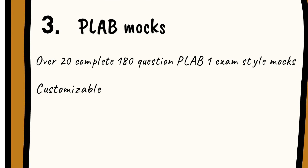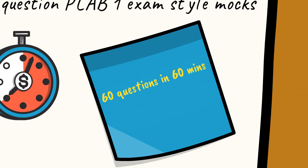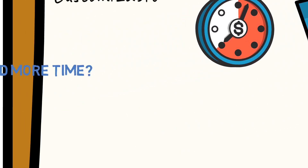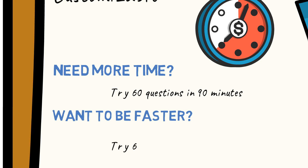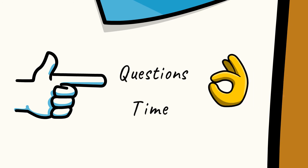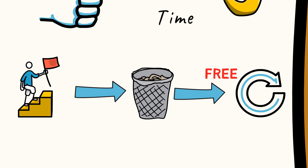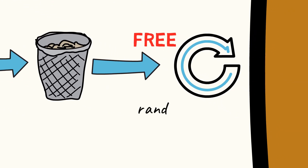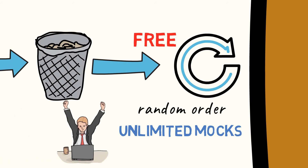You can customize these mocks and test yourself as time permits. For example, you can do 60 questions in 60 minutes, or if you don't have that much time, 10 questions in 10 minutes. Do you need more time per question? Try 60 questions in 90 minutes. Or if you're trying to be faster, try 60 questions in 45 minutes. The number of questions and the time is completely up to you. And the best part is, once you're done, you can archive these questions and attempt them again for free. When you archive the questions, they will appear again in a random order, leaving you with unlimited mocks to prepare with.